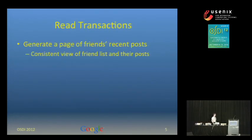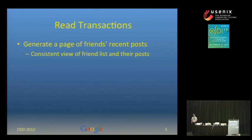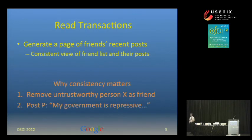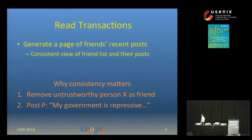So why do we care about read-only transactions? In our social network, suppose we want to generate a web page that consists of my friend's recent posts. We want to generate this in a consistent fashion — we want to make sure that the list of friends we use to generate the post is consistent with the posts that my friend put up on their stream. Consistency matters because people can use these applications for ways you don't anticipate that have real-world consequences. For example, imagine somebody wants to criticize their government and wants to make sure nobody who might rat them out sees that post.